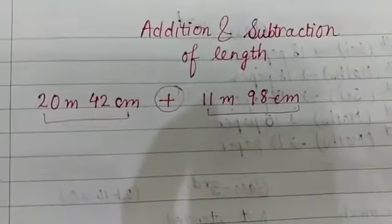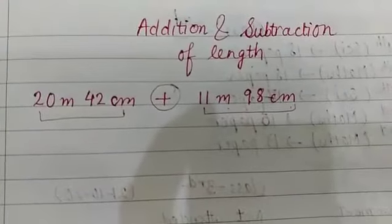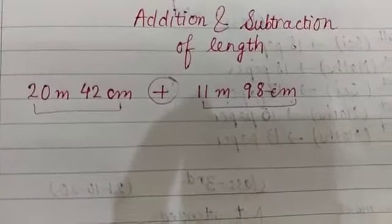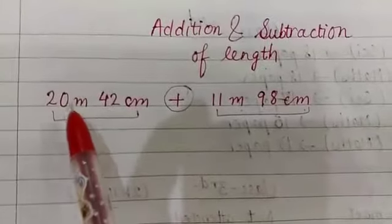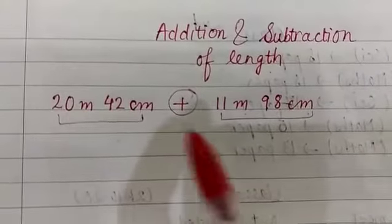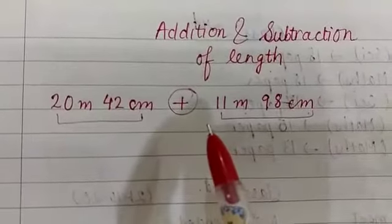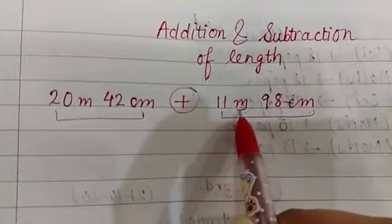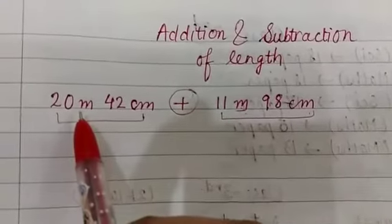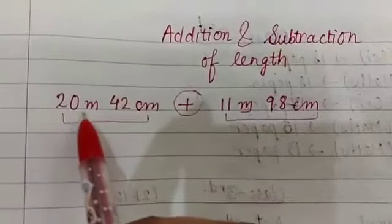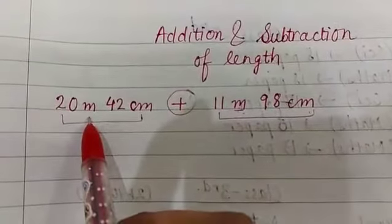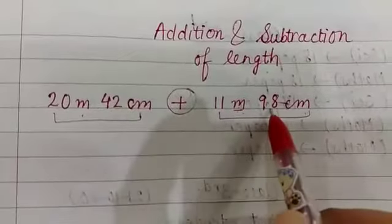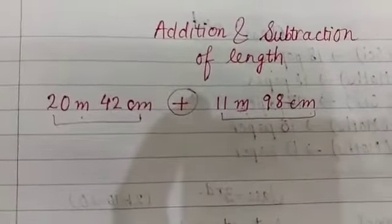So when you do addition or subtraction, you have to pay attention that the same units are added with the same units. If we have 11 meters, we will add it with 20 meters — you cannot add meters with 42 centimeters or 98 centimeters.